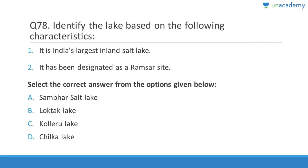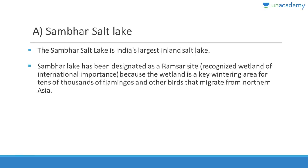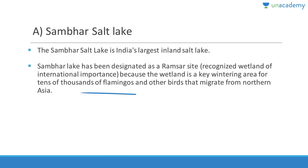Question 78: India's largest inland salt lake is Sambhar Lake, located near Jaipur. It has been designated as a Ramsar site. It is a key wintering area for tens of thousands of flamingos and other birds that migrate from northern Asia.